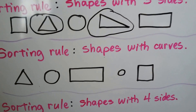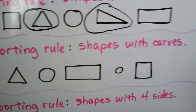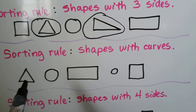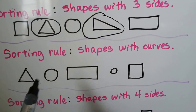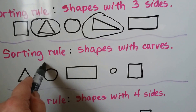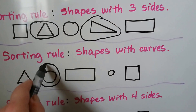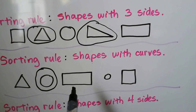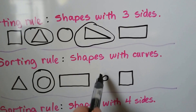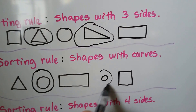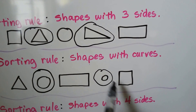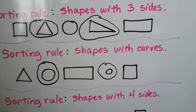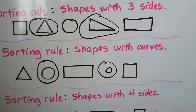This sorting rule says: shapes with curves. A triangle doesn't have curves. A circle does, so we can circle that one. Rectangles don't have curves. This little circle has curves. And squares do not have curves — they have vertices and corners.